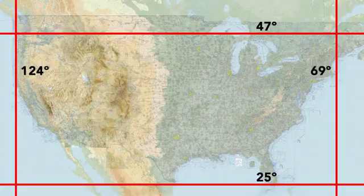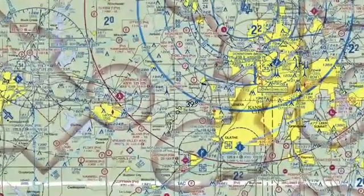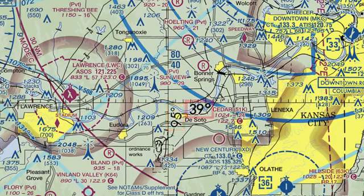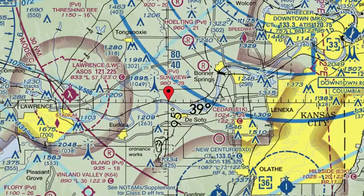If we zero in on a spot roughly in the center of the country and zoom into the border between Kansas and Missouri, where the 95 degrees west longitude intersects the 39 degree north latitude, the chart pinpoints a spot on the Earth's surface just west of Kansas City.